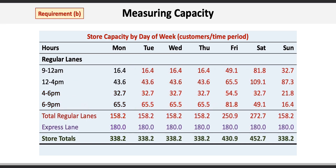Here are the results for the rest of the week. You're encouraged to pause the video and confirm some random calculations to ensure you understand how all the values are determined. After following the same approach for each time slot for every day of the week, the store can serve approximately 2,574.6 — or 2,575 — customers per week. If you've ever wondered how grocery stores determine how many lanes to keep open, now you have some idea of the approach taken.